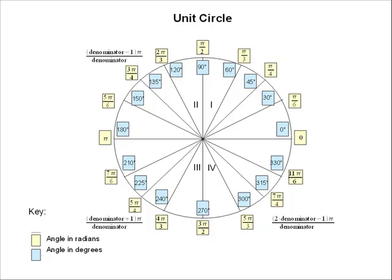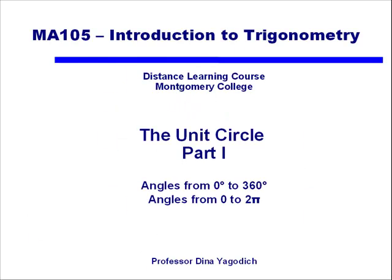With a little bit of practice, you'll be able to quickly write out the radians for the unit circle, and it will make your test go much faster and with much less work. And there we have the first part of the unit circle, going through those angles from 0 to 360 degrees and 0 to 2 pi.